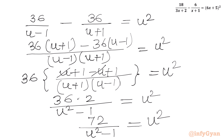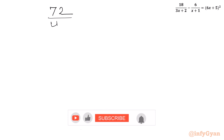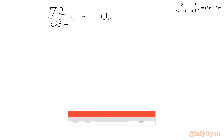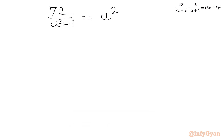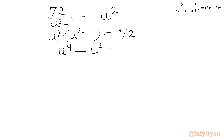Now I will cross multiply. So we write: u² × (u² − 1) = 72, which gives u⁴ − u² = 72, or u⁴ − u² − 72 = 0.